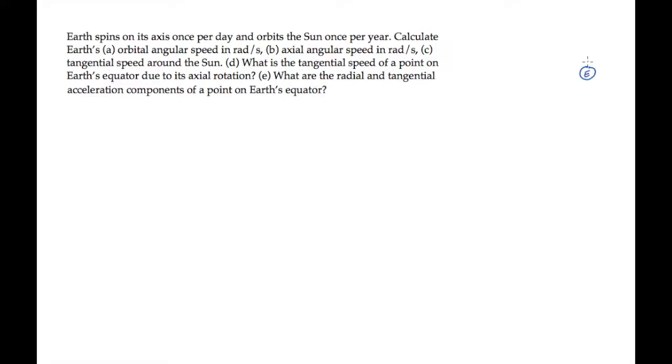Earth rotates on its axis once per day and it orbits the Sun once per year. Earth's radius at the equator is 6378 kilometers, which is 6.38 times 10 to the 6 meters.